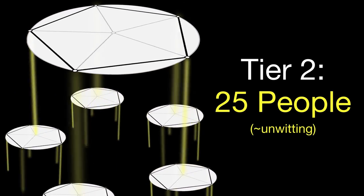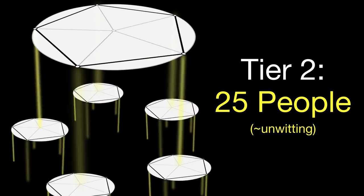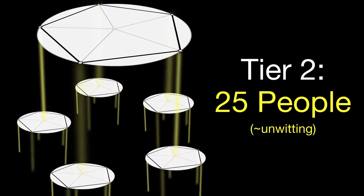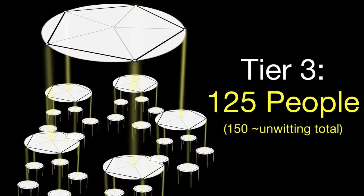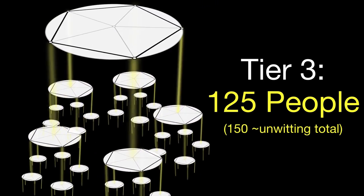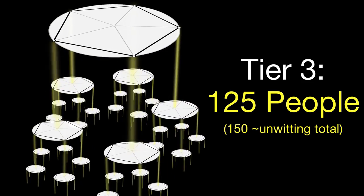...each directly control or strongly influence five unwitting accomplices. The next compartments below those five contain 25 unwitting accomplices, who might think they are only working with the one participant on one project or task.